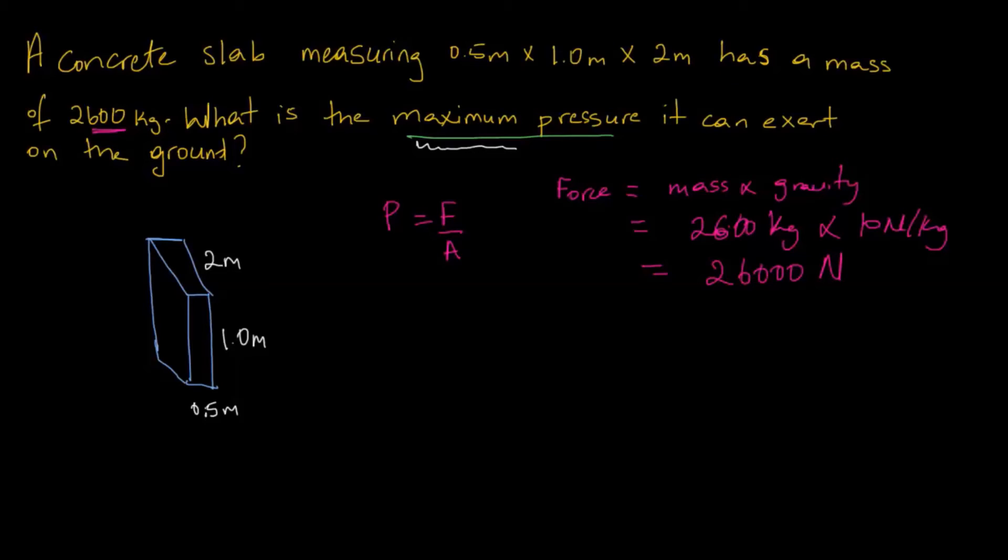So we have our force here. Now we need to find out what area will allow us to get the highest or the maximum pressure. Since the area is in the denominator, we need to find the smallest area of this object to cover the surface of the ground, so that we have the highest pressure being exerted on the ground.